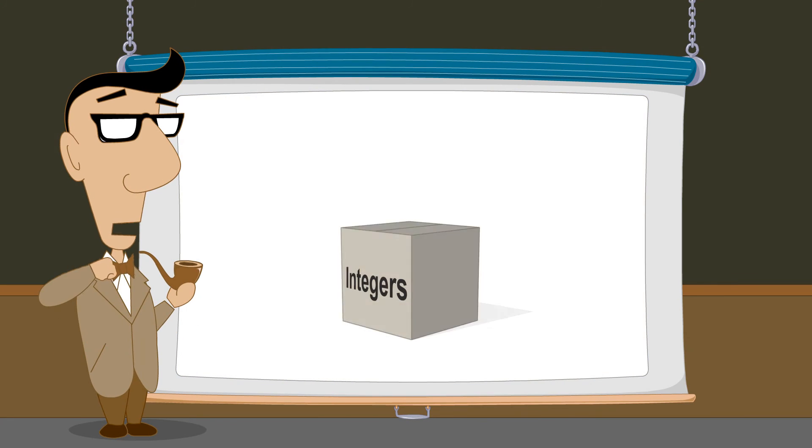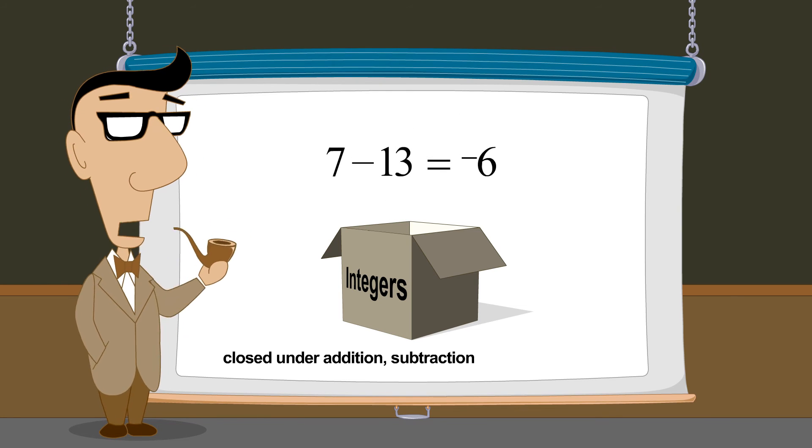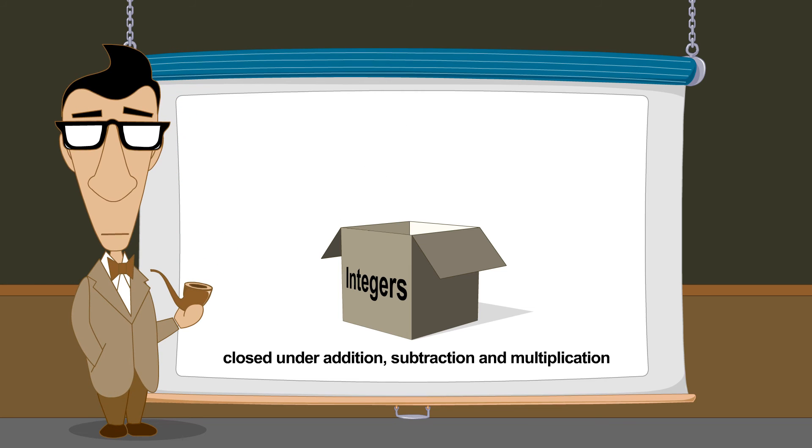In the previous lectures, we have seen that integers are closed under addition, subtraction, and multiplication, since the result of applying any of these operations to integers always produces another integer.